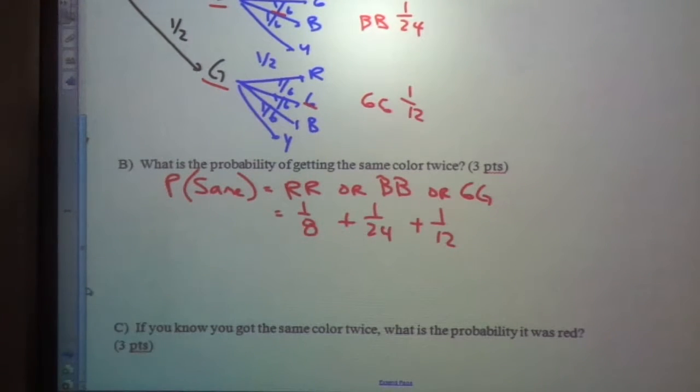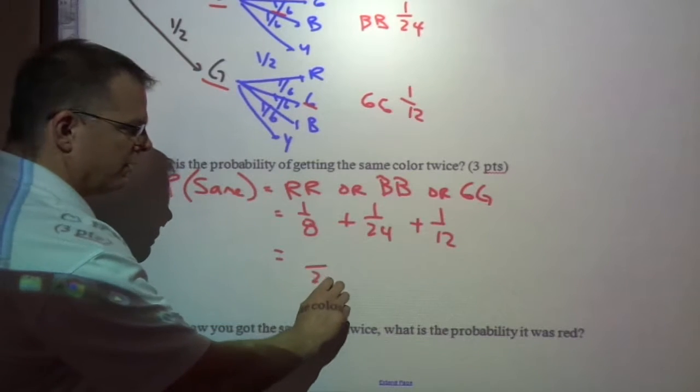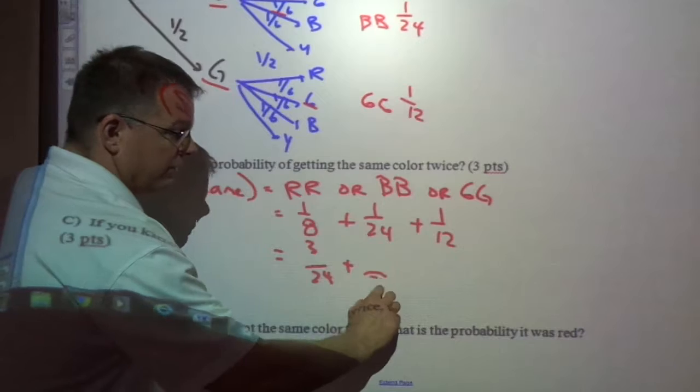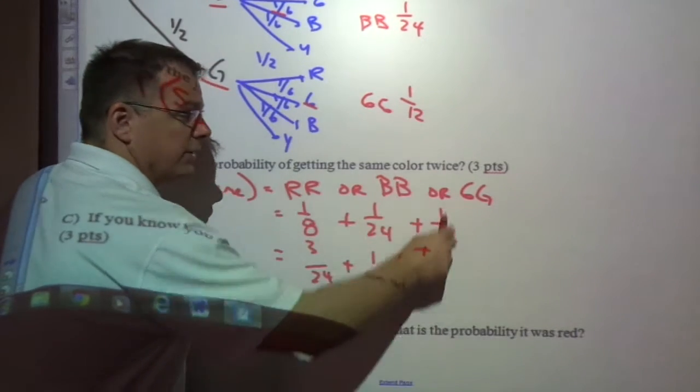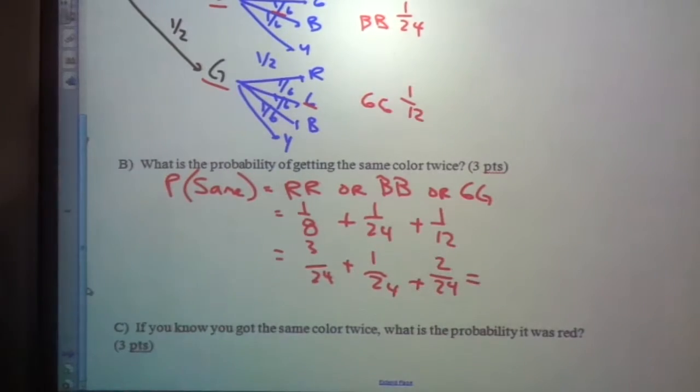Now, from here, we just have to add these fractions together. When you're adding fractions, you get a common denominator. A good common denominator might be twenty-four. So if I multiply this by three, and this one by, well, nothing, this is fine. This one by two.